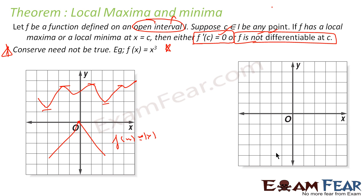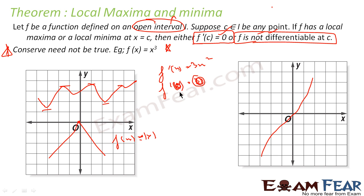For example, if my function f(x) = x³, we find f'(x) = 3x², and f'(0) = 0. So f'(c) at c = 0 is 0. But this function need not have a maximum or minimum value — the point 0 is not a maximum or minimum. So the converse is not true. What I am saying is: if c is a local maximum or minimum, f'(c) has to be 0. But if f'(c) = 0, it does not mean that c is a local maximum — it is not guaranteed.